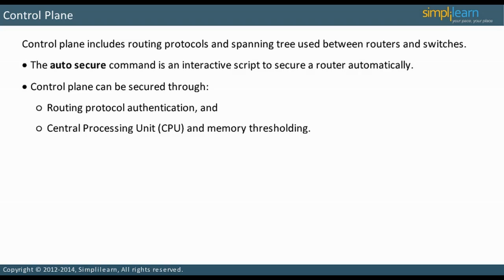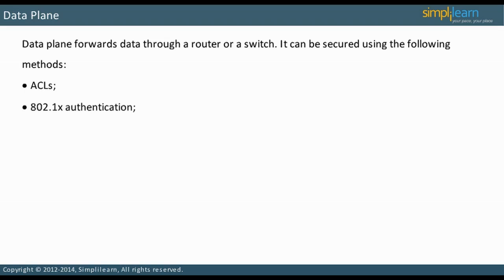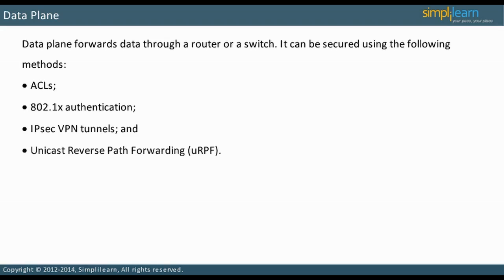The data plane forwards data through a router or a switch. It can be secured through ACLs, 802.1X authentication, IPsec VPN tunnels, and unicast reverse path forwarding.